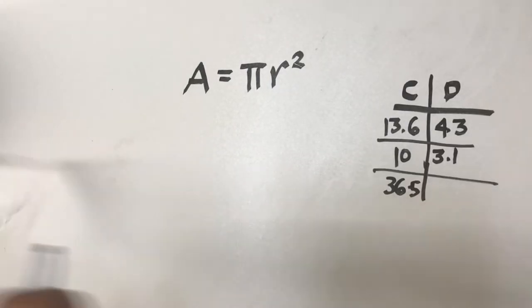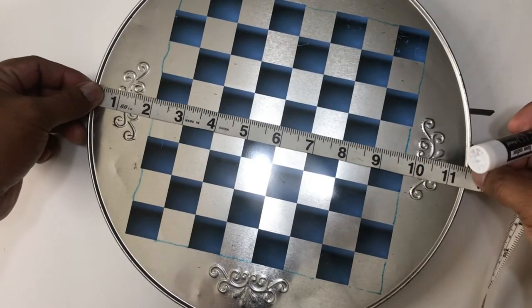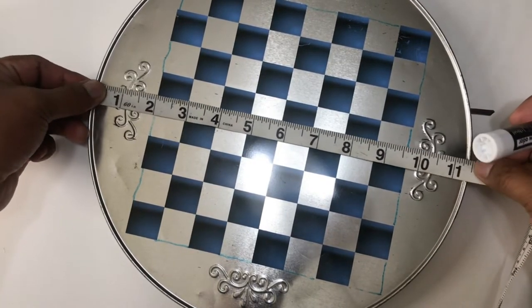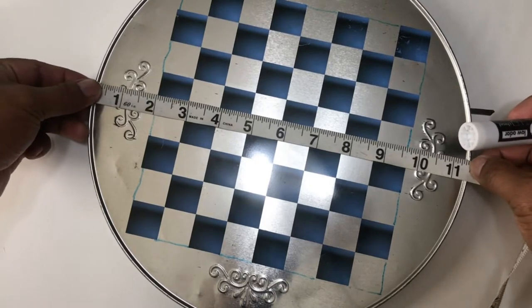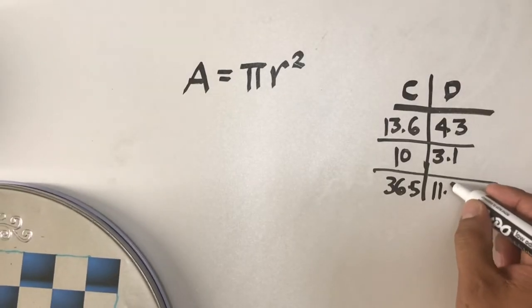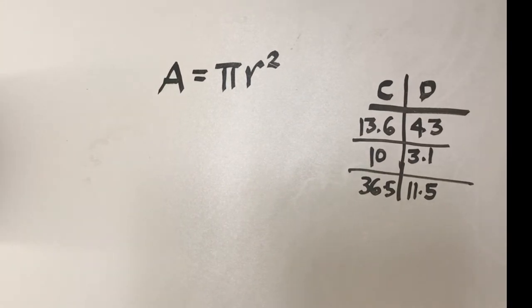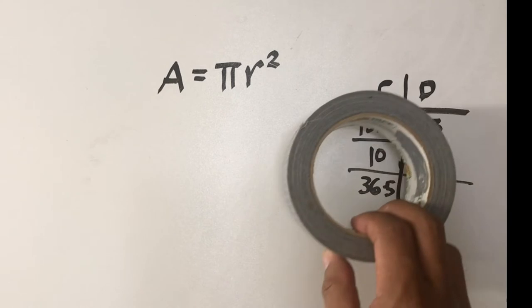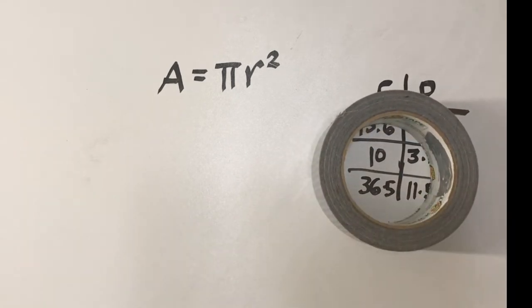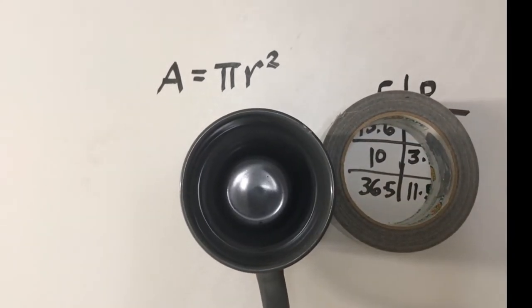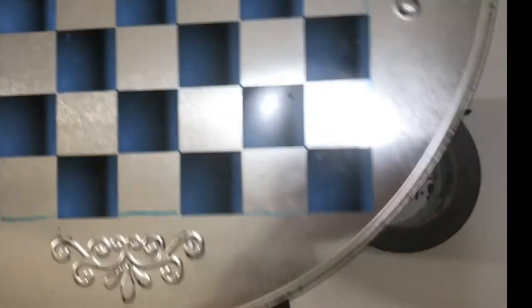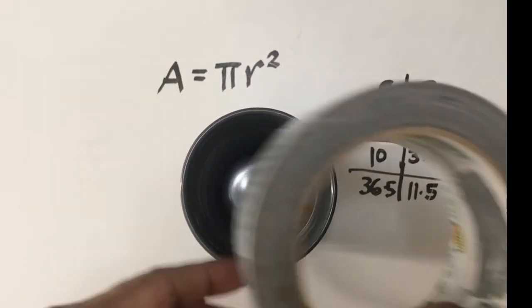And for the diameter we get around 11.5. What we have here is the measurement of the circumference and diameter of three different sized circles.